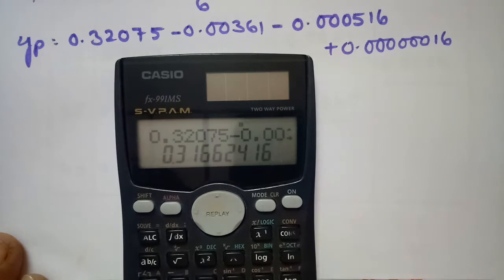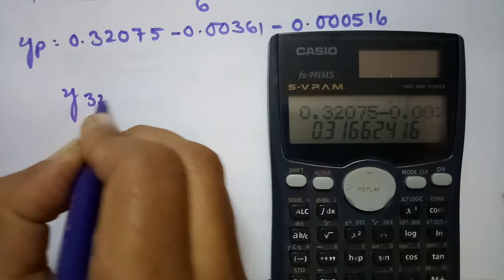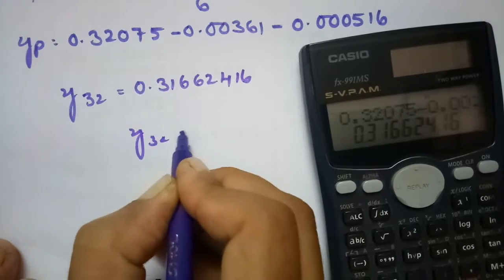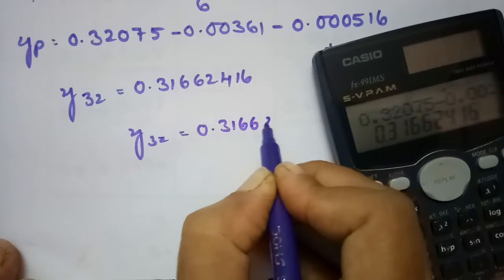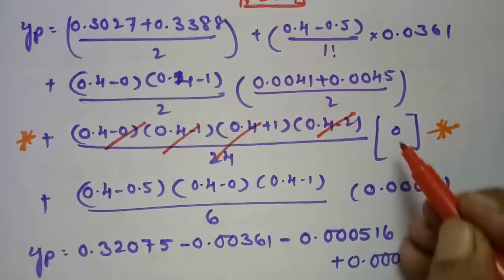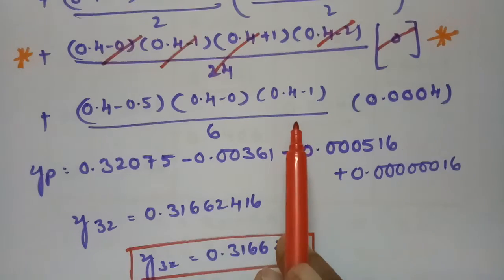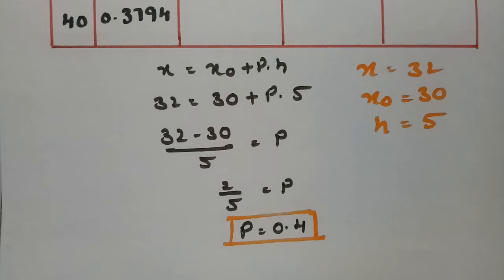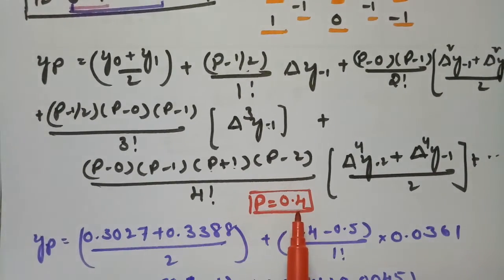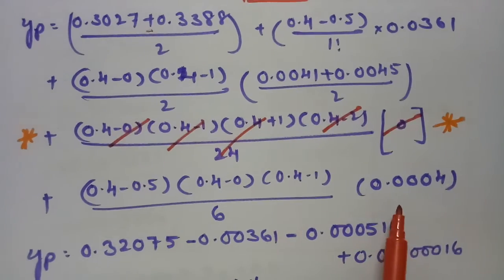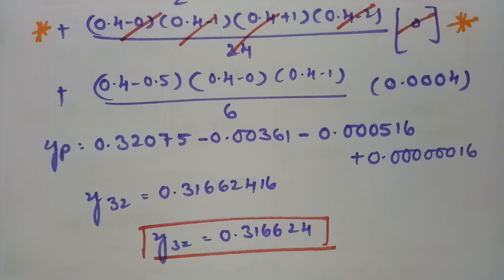So, Y at 32 = 0.31662416, which is approximately 0.316624. This is the final value. There is no need to substitute the fourth-difference term. Remember: double, single, double, single values are sufficient. First frame the forward difference table, then calculate P, then apply Bessel's formula substituting P = 0.4 and reading double, single, double, single values from the table.